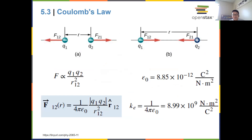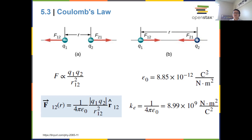We talked about Coulomb's law, which examines and calculates the strength of the interaction between charges. The vector form F equals 1 over 4π ε₀, where ε₀ is 8.85×10⁻¹² C²/(N·m²), and 1/(4πε₀) equals 8.99×10⁹ N·m²/C². That constant times q1·q2 in absolute value, divided by the separation squared, in the direction connecting the two charges.